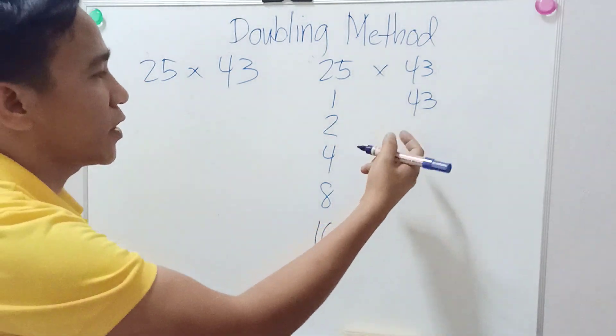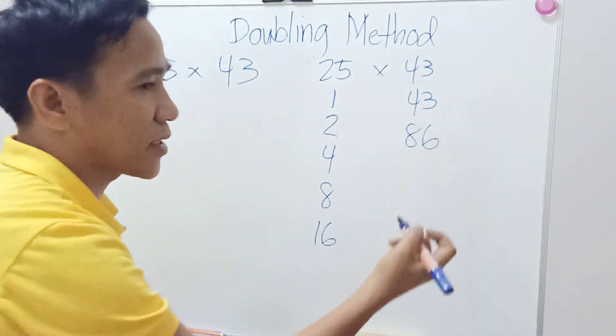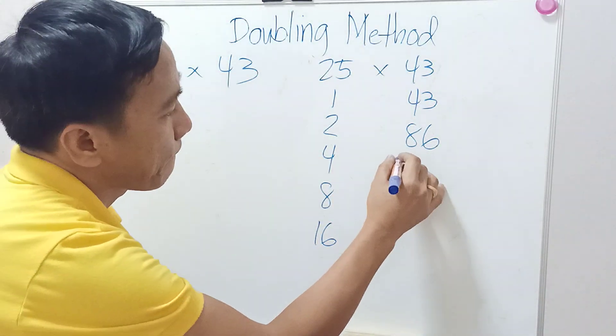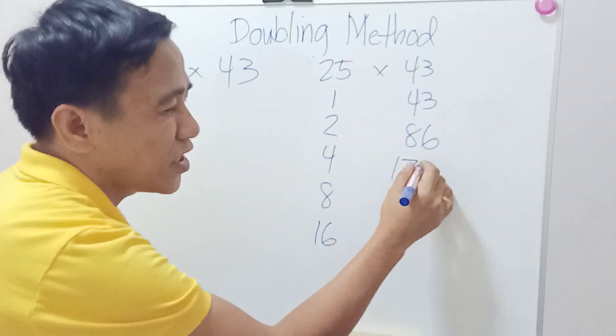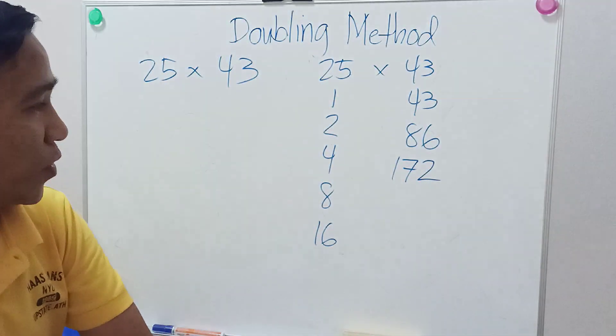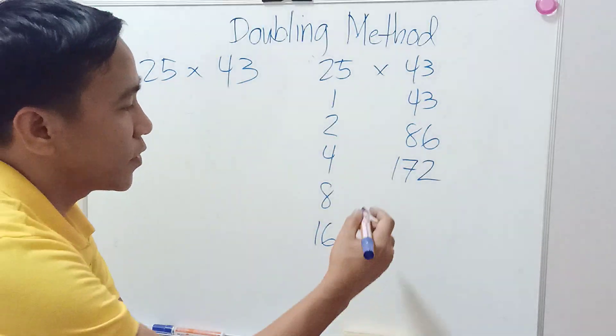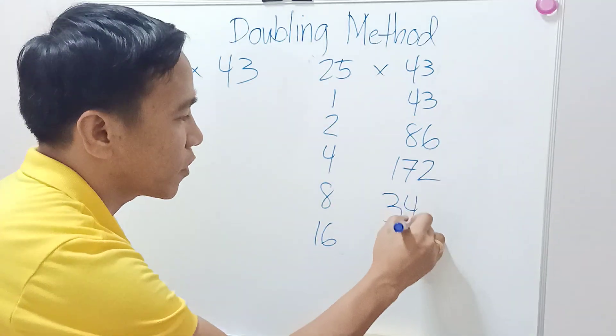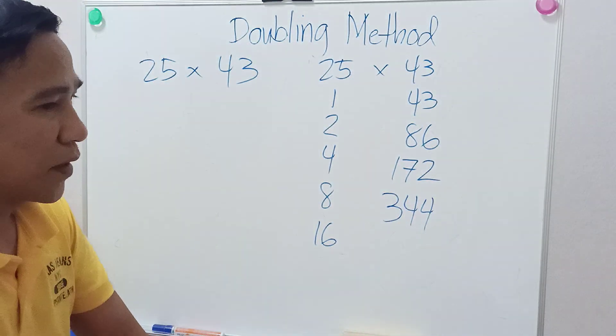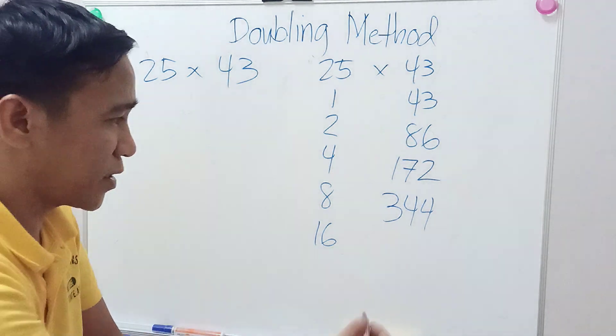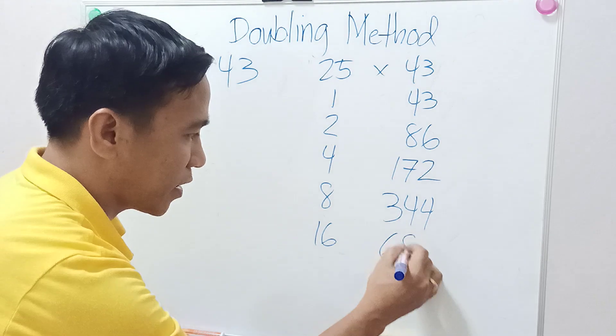Double of 43 is 86, double of 86 is 172, double of 172 is 344, and double of 344 is 688.